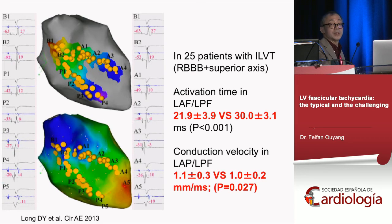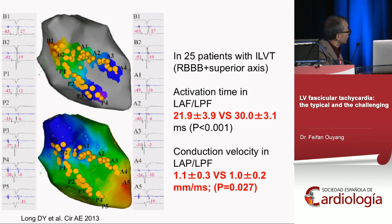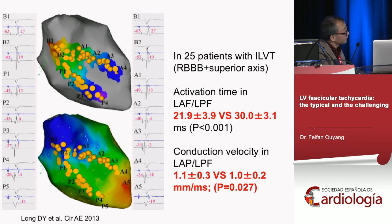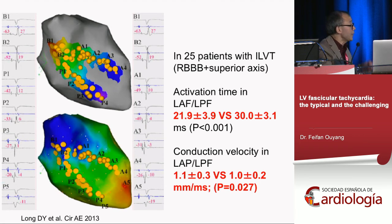We performed a complete CartoMap of the left ventricle from the His, anterior fascicle, and posterior fascicle. Colleagues from Beijing's Anzhen Hospital studied 25 patients with anterior fascicular VT and typical posterior fascicular VT. They measured activation time in the anterior and posterior fascicle, finding that in all patients, activation time in the posterior fascicle was much longer compared to the anterior fascicle, and conduction velocity was reduced in all patients with anterior fascicular VT.